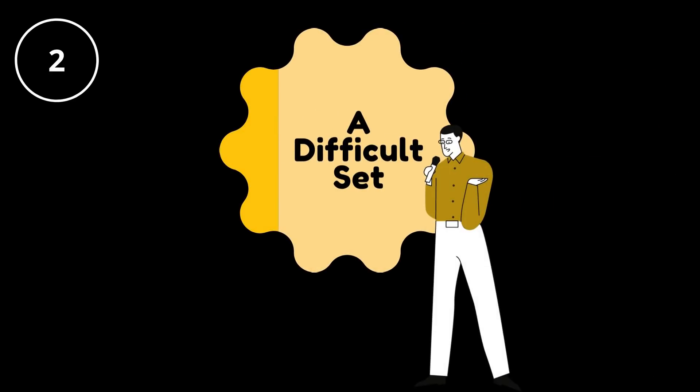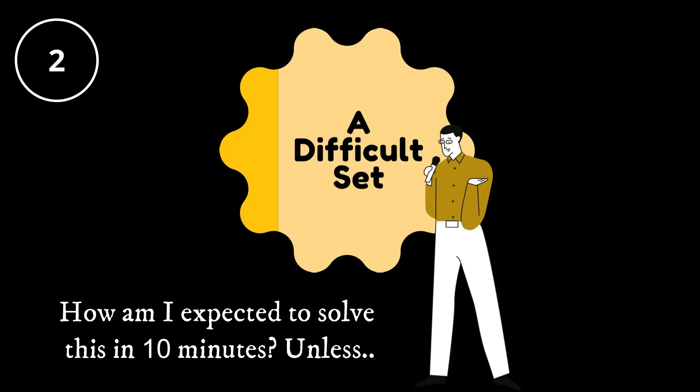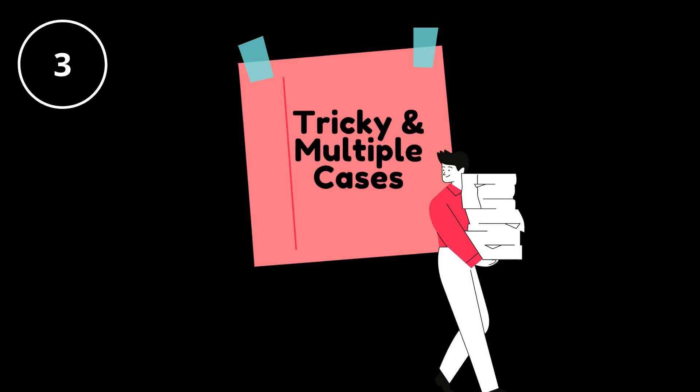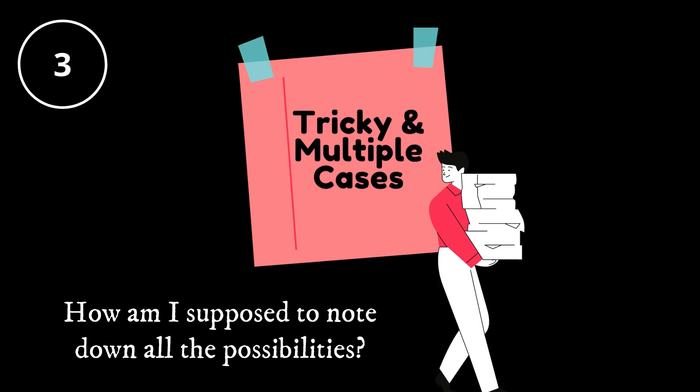The second rule is to understand that no matter how difficult a question, the question paper setter wants you to solve it, which means that they would be giving you some clues that make it possible to solve a difficult question in less than 10 minutes. Your objective is to find what those clues are. And finally, no matter how difficult a set, the only thing that makes it difficult is your inability to picture the constraint, which is what happens when there are multiple possibilities to a set. So, let's get started with the question now.